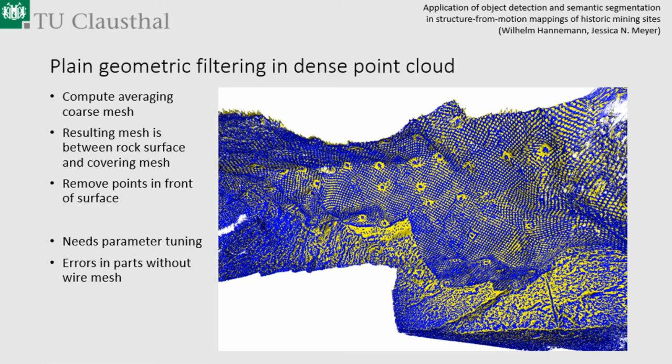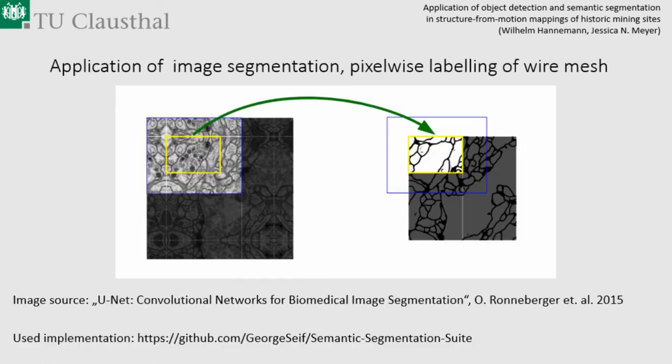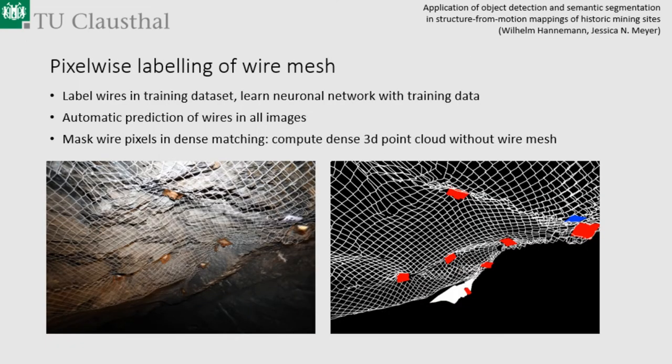We decided to directly classify each pixel as wire or not, using semantic segmentation. We took inspiration from the U-Net paper on biomedical image segmentation, where they used pixel-wise labeling of cell borders in microscopic images. Those cell borders had quite an organic structure, similar to our meshes, and they faced the same problem: a very small training set because manually labeling images is tedious.